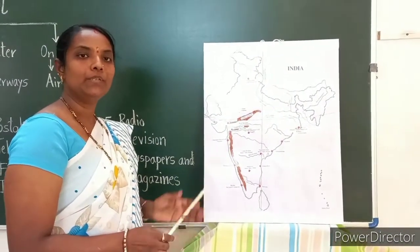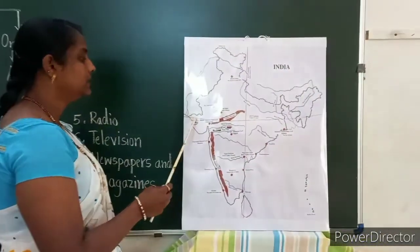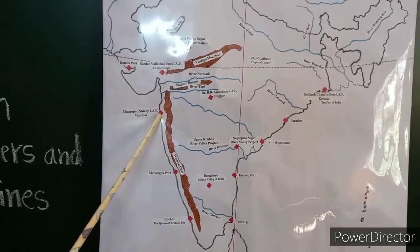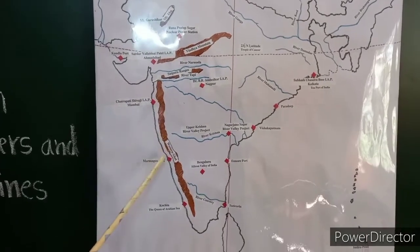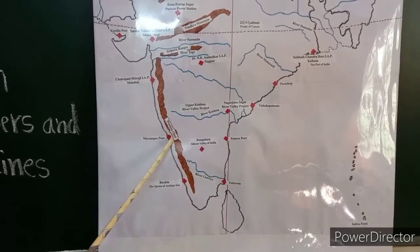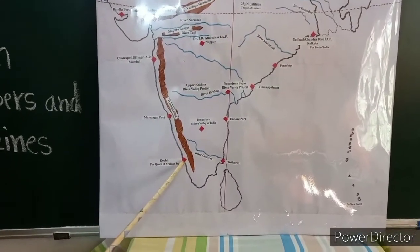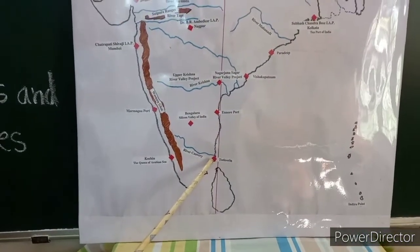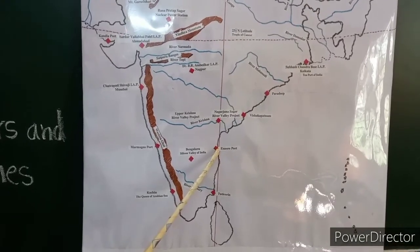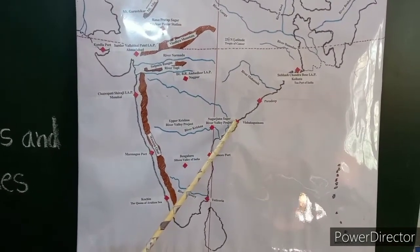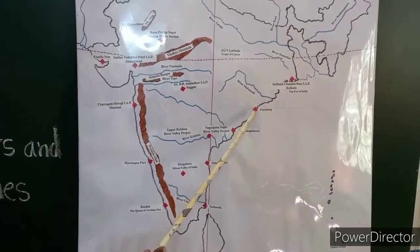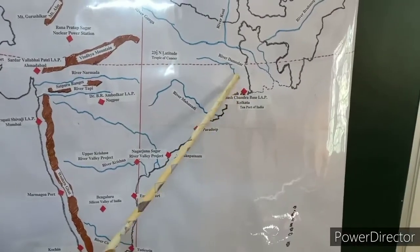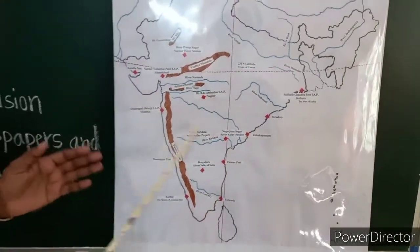In India, the major ports are: Kandla port in Gujarat, Mumbai port in Maharashtra, Marmagao port in Goa, Kochi port in Kerala, Tuticorin port in Tamil Nadu, Ennore port in Andhra Pradesh, Visakhapatnam port, and Paradip port in Odisha, and Kolkata port in West Bengal. These are the major ports in India.